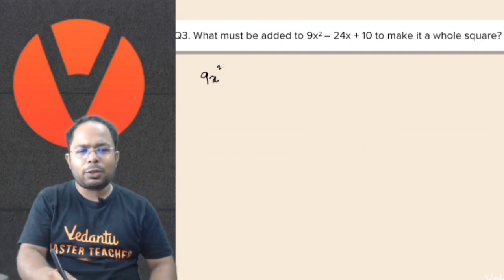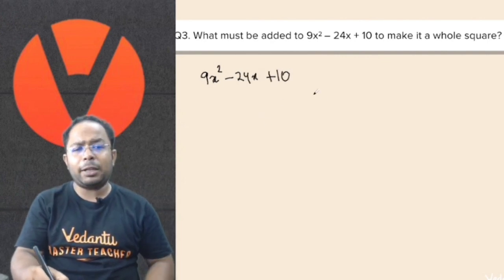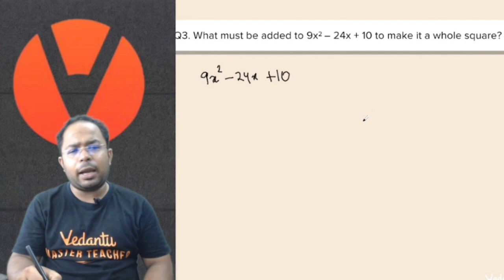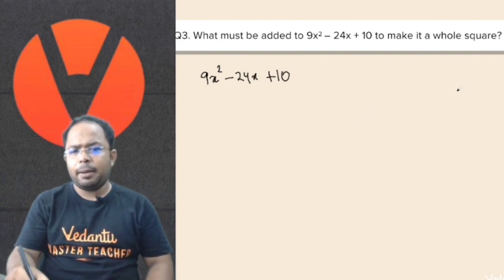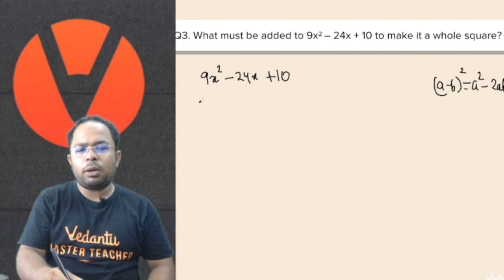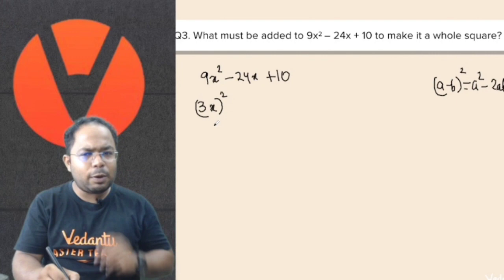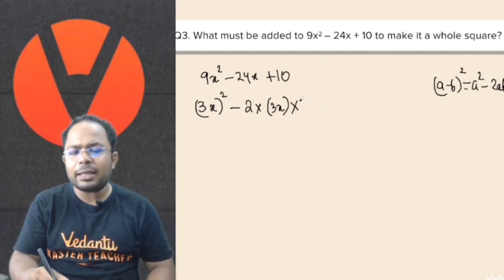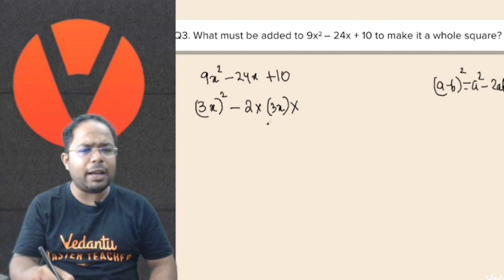9x squared minus 24x plus 10. We cannot directly write it as a plus b whole square or a minus b whole square right now. But we know a minus b whole square equals a squared minus 2ab plus b squared. So 9x squared can be written as 3x whole square, where 3x acts as a, and we need 2 into a into b to equal 24x, so a is 3x and b is 4.